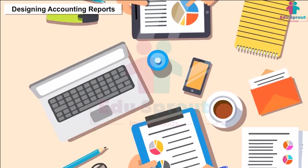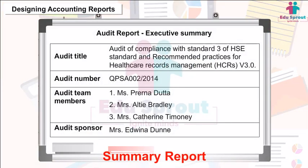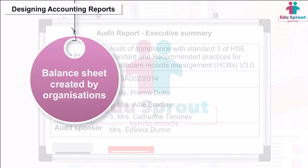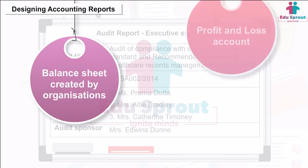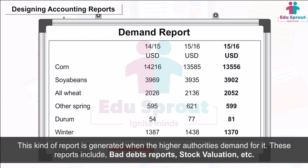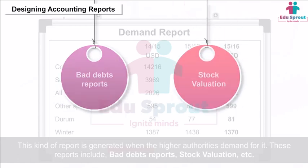There are different types of reports generated in accounting software depending on user requirements. MIS reports can be of the following types: 1. Summary Report — this report briefs all the activities of the organization, covering day-to-day operations and presenting a summary, such as a balance sheet or profit and loss account. 2. Demand Report — this kind of report is generated when higher authorities demand it; examples include bad debt reports, stock valuation, etc.